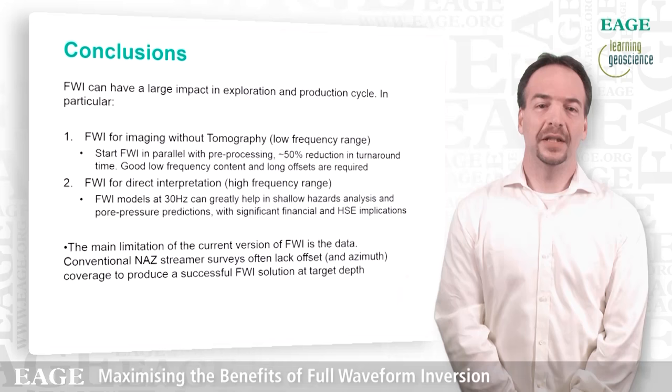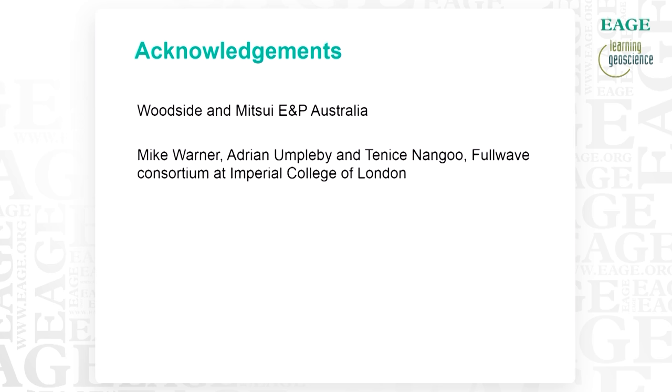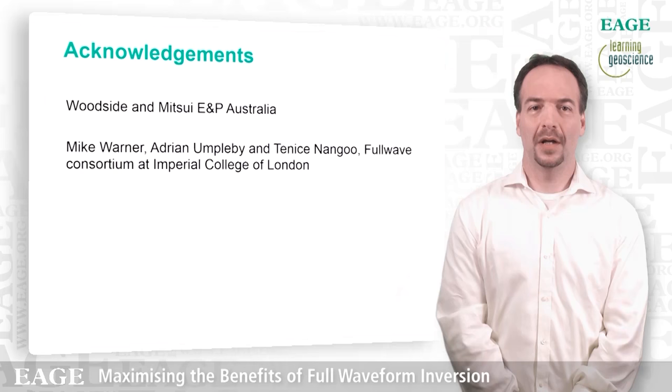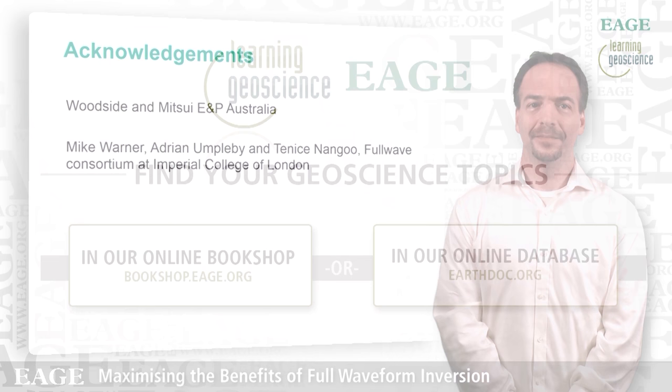As I showed, the main limitation of the current version of FWI is the data — our conventional narrow-azimuth streamer just lacks the kind of offset we need to produce a successful FWI at target depth. Finally, I would like to acknowledge Vetsai and Mitsui E&P Australia for allowing me to show this lecture. I also would like to thank Mike Warner, Adrian Ampleby and Tarnis Nangua, the Fullwave Consortium of Imperial College for their continuous help in FWI. Thank you all for your attention.